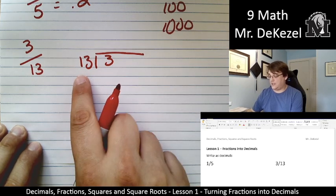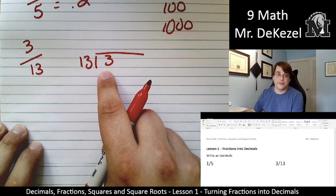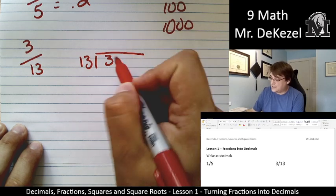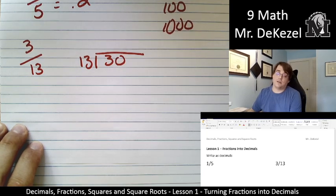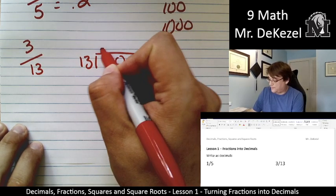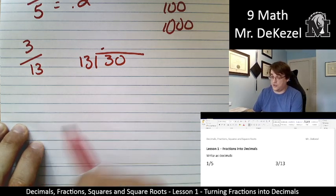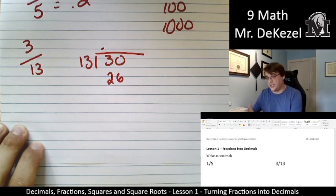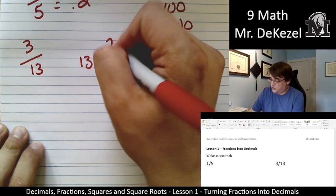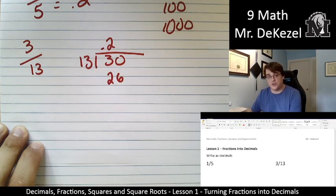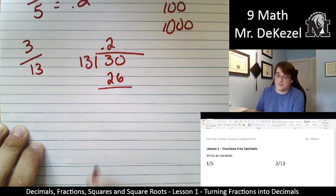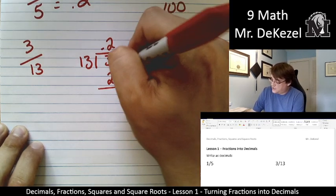We see 13 does not go into 3. We already knew that. That's why we're doing this. So we're going to add a 0. And when we add a 0 to long division, we add a decimal. Then we can see how many times 13 goes into 30. 13 goes into 30 two times. And with these questions, we're always going to go to three decimal places.